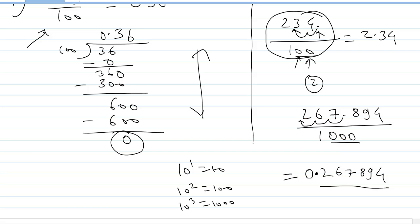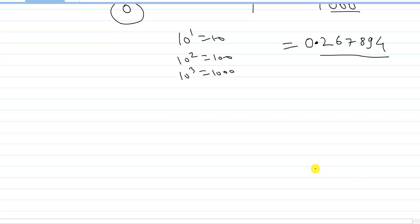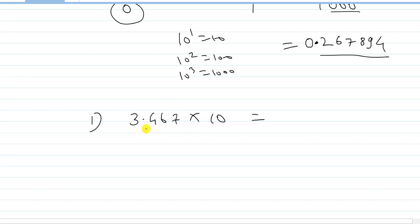In multiplication by a power of 10, you do the reverse. For example, 3.467 multiplied by 10 — count the zeros: only one. So shift the decimal point to the right by 1 digit. The answer will be 34.67.